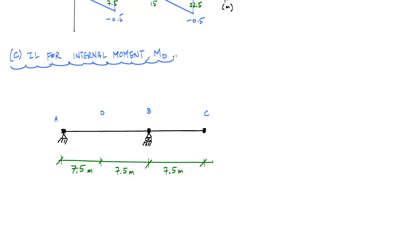And so what that means is we want to redraw the structure with the action removed. In that case, that means having no moment but being able to transfer shear and axial force across point D, which is really a hinge. So I'm going to throw in a hinge at point D.